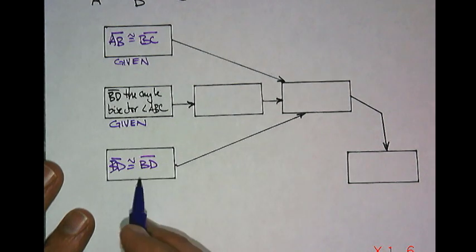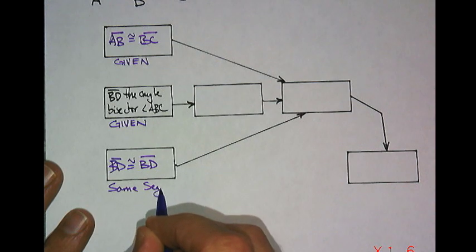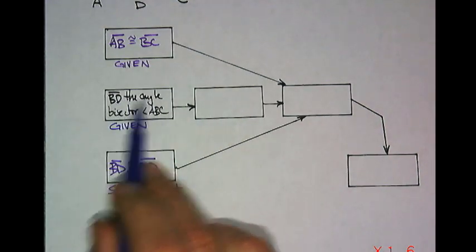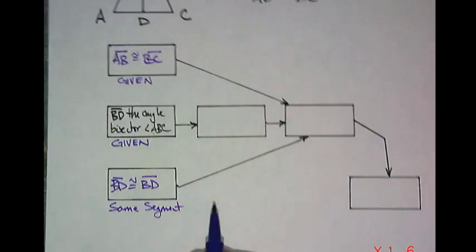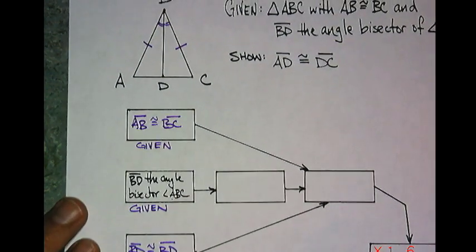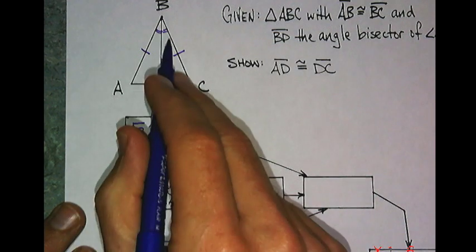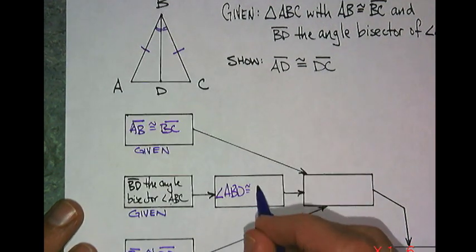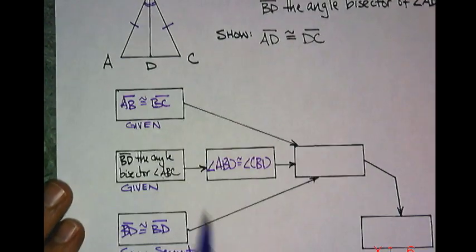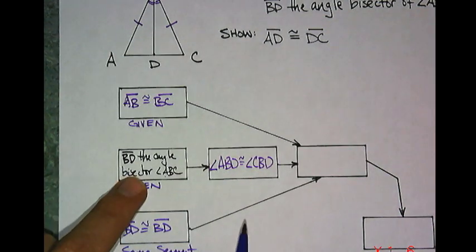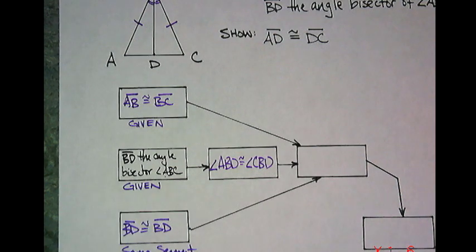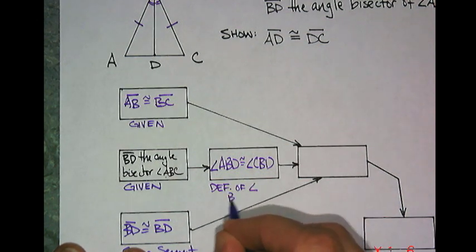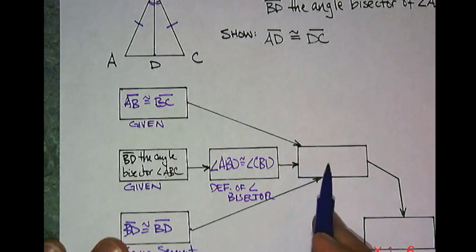As my example, I can either write same segment or reflexive property. Now, what should I write here? If BD is the angle bisector, well I marked it on there, then we know those two angles are congruent. Angle ABD is congruent to angle CBD. What reason do I think I know that is true? That was given. The reason I know these are, well, because you told me it was an angle bisector. That's just the definition of angle bisector.